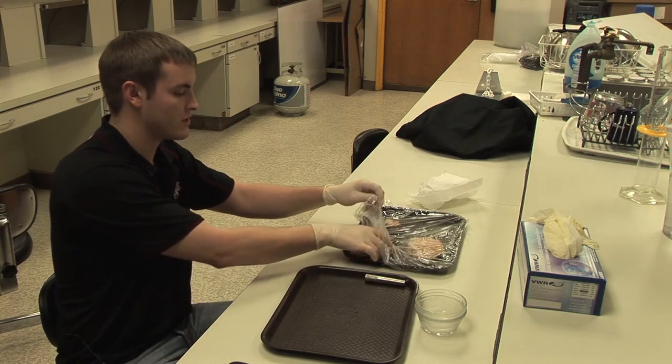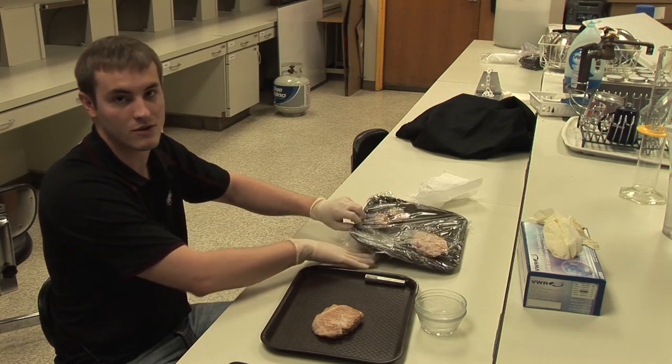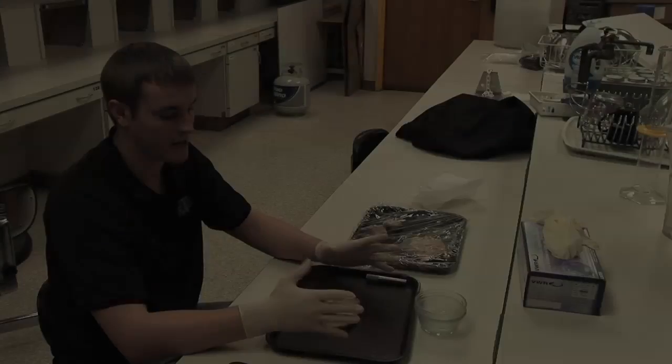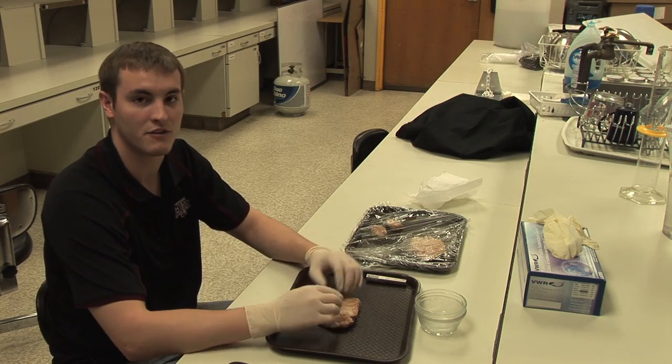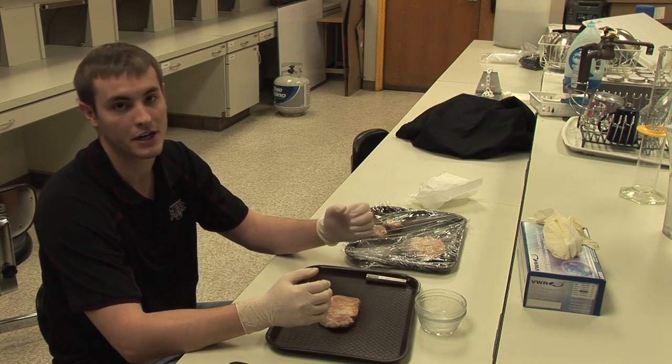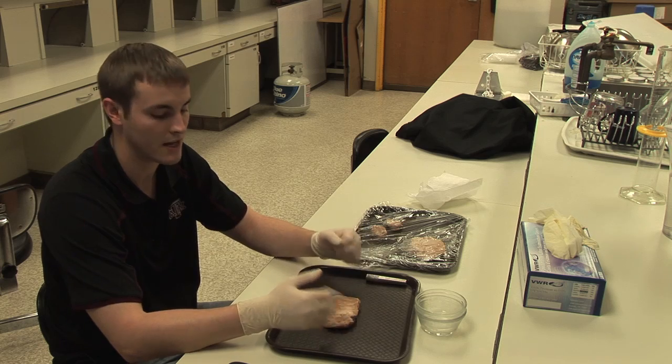So when actually taking cores of the samples, you want to make sure to get six cores from each product. This makes sure you get an accurate measurement from the steak itself and not something where you catch a fat pocket or a piece of connective tissue that will throw off your results.